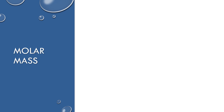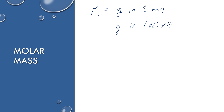Now let's connect this to molar mass. We use uppercase M to represent molar mass, and it is defined as the grams in one mole of a substance. To rephrase it, it's the grams for every 6.022 times 10 to the 23rd items of that substance — whether it's an atom, molecule, or formula unit. So we're connecting it all together with molar mass.